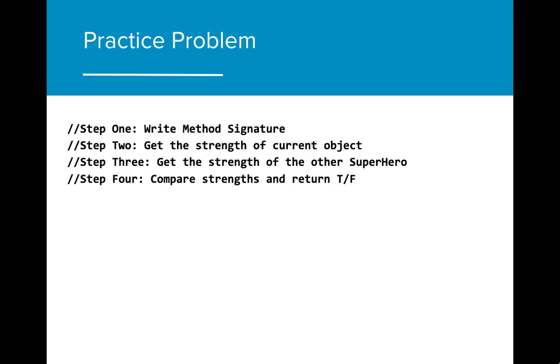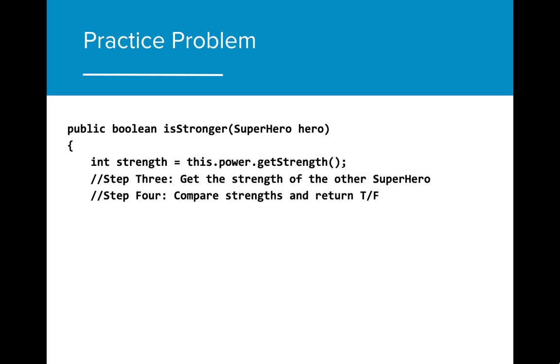Here's the pseudocode for our practice problem. Let's start with the method signature. We want to make this a public boolean method that takes a superhero object as a formal parameter so we can compare the strength of one superhero to another. Now we need to get the strength of the current object. We can do this by calling this.power to access the power object in the current superhero and then calling getStrength on that power.